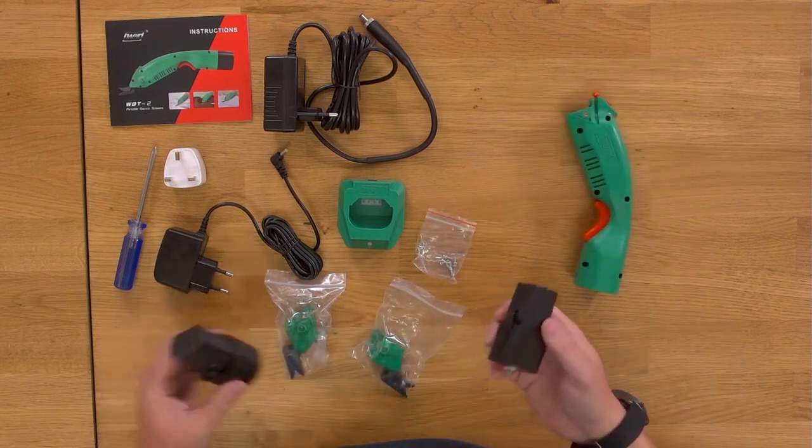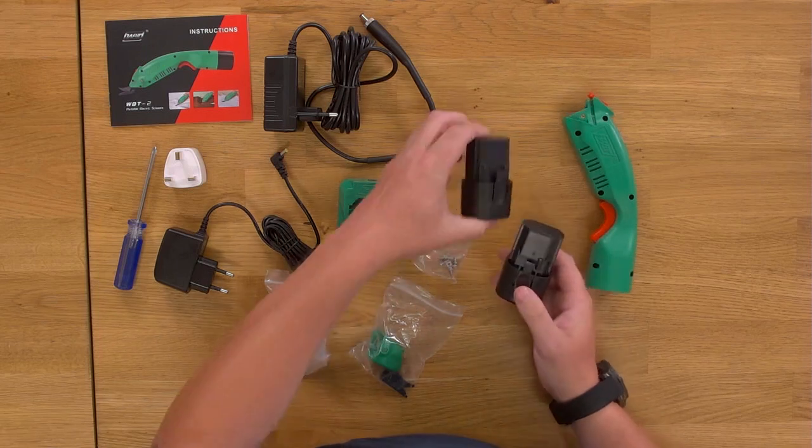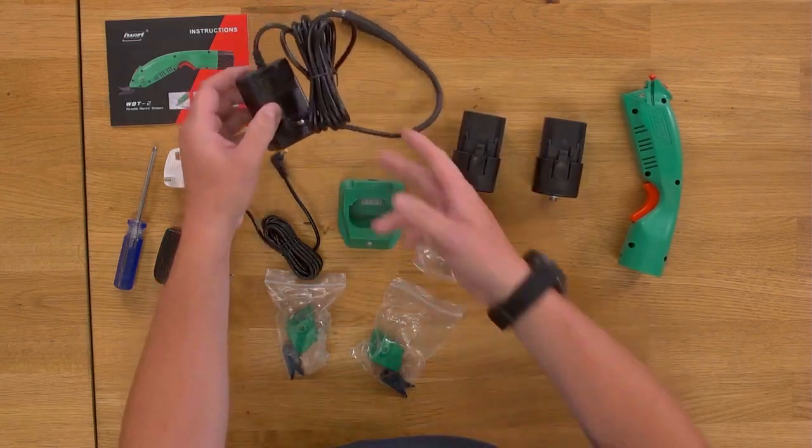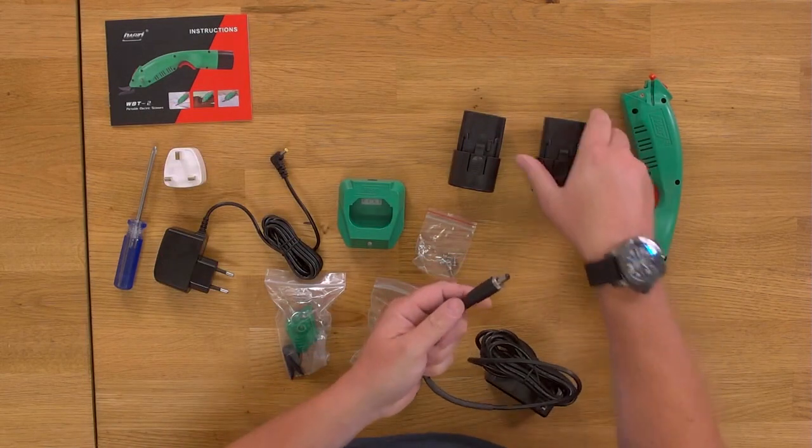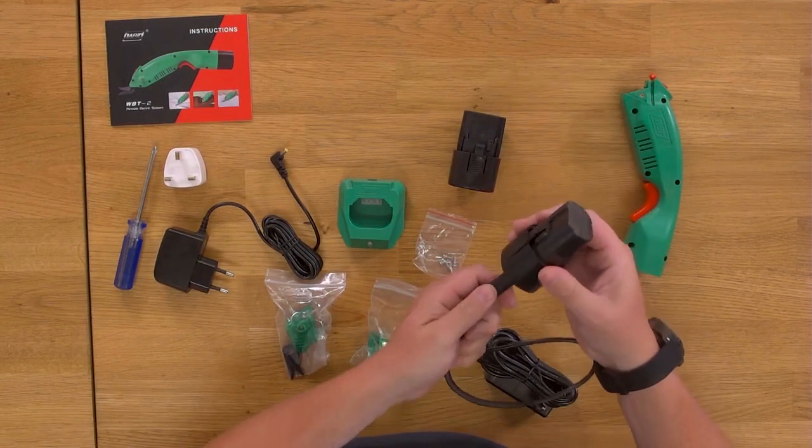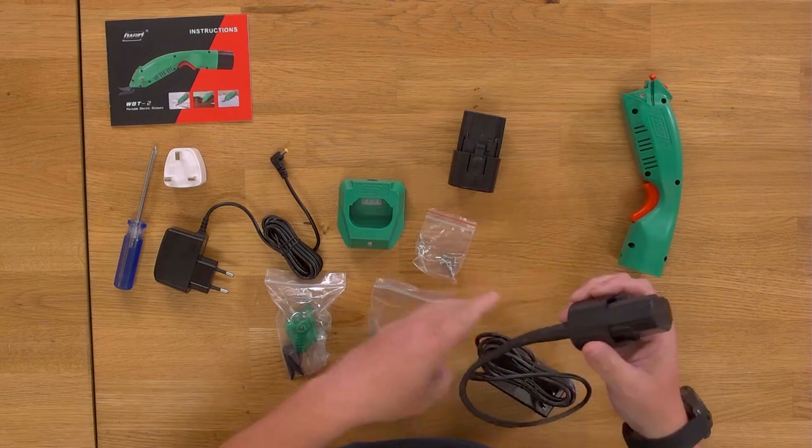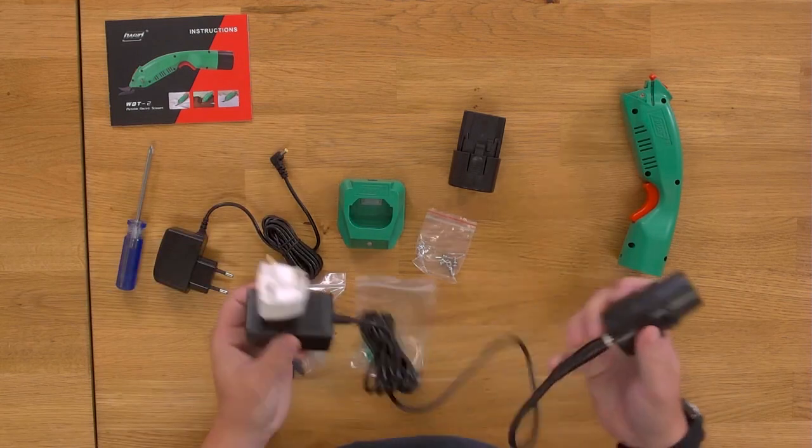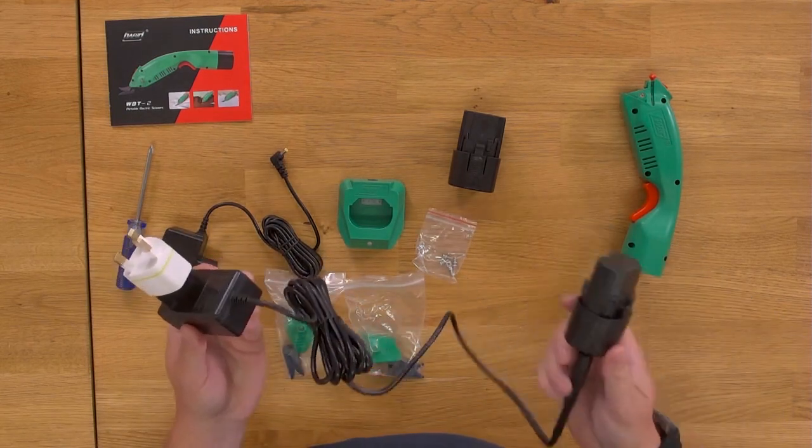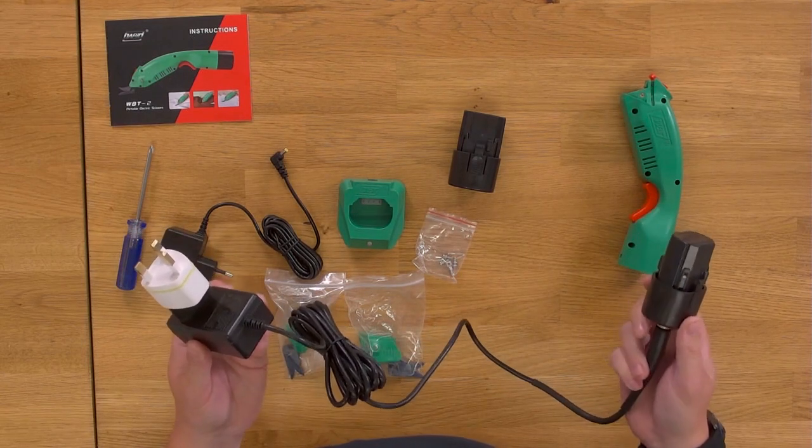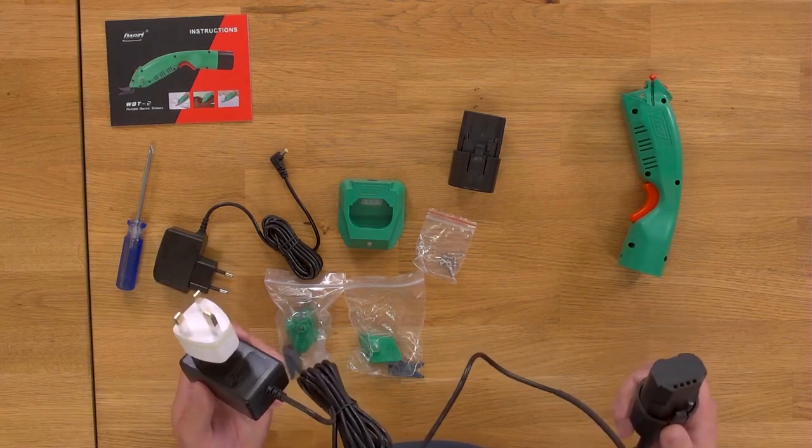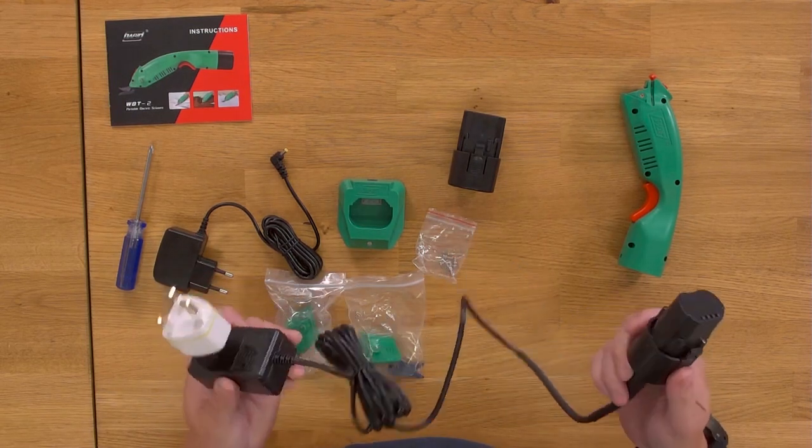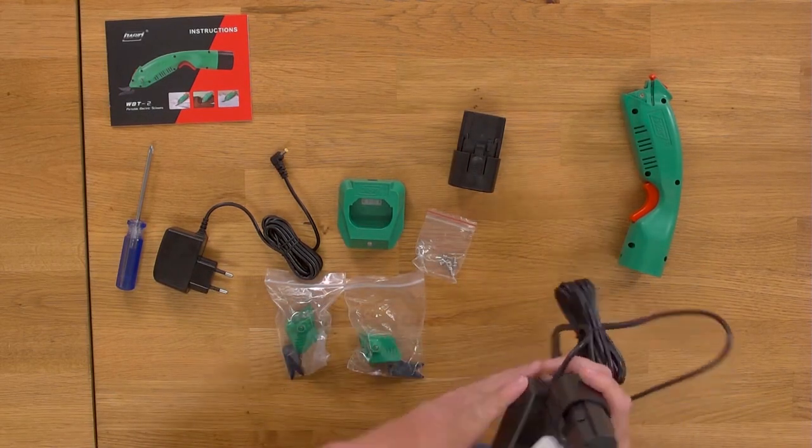With the electric scissors there's actually two adapters. You've got this one here which is a rechargeable battery, and this one here which goes with this plug and enables you to use it just off normal power. You can plug this in and run the scissors off the mains, and that plugs in via this little adapter to your main supply. They recommend that you can use the scissors for up to eight hours continually, so that's an awful lot of cutting without a rest.